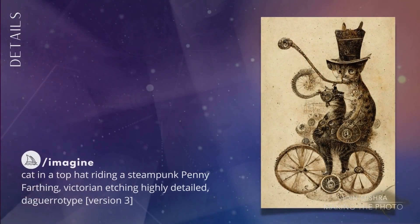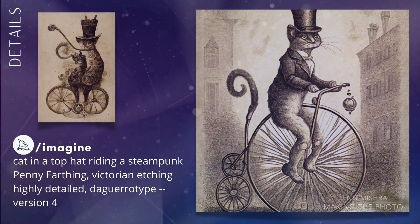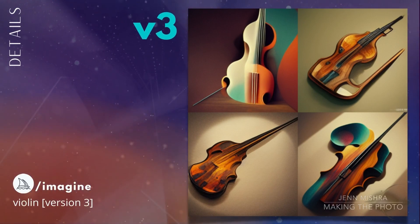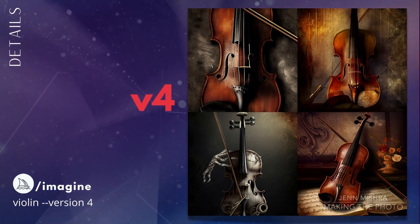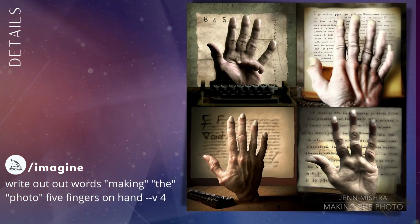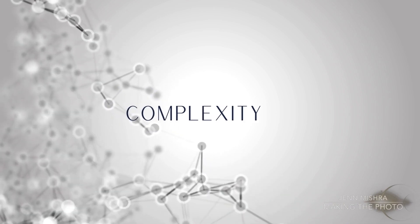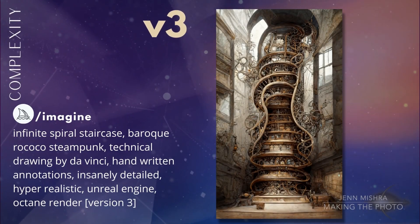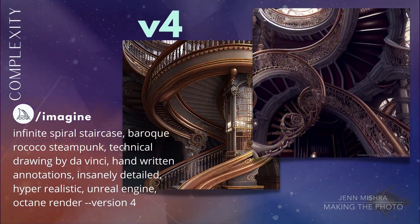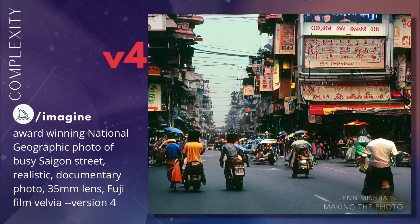Midjourney version 4 is much better at getting small details right. Sometimes version 3 sort of knew what something was, but not quite. V3 sort of knew that a penny farthing is a type of bicycle, but version 4 gets it right. Many of the problems with animals and musical instruments seem to be a thing of the past — version 4 is much better at creating a violin. Human hands are still a problem, but the AI is making progress; at least one out of the four hands has the correct number of fingers. Version 4 handles more complex prompting with multiple levels of detail, and this Saigon street scene becomes much more real in v4.